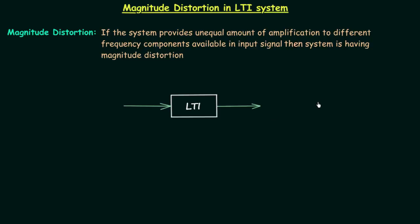From this lecture we will start a new topic, and in this topic we will talk about distortions in LTI systems. There are two types of distortions: the first one is known as magnitude distortion and the second one is known as phase distortion. In this lecture we will talk about magnitude distortion only. I will first explain what magnitude distortion is, and after that we will see one example.